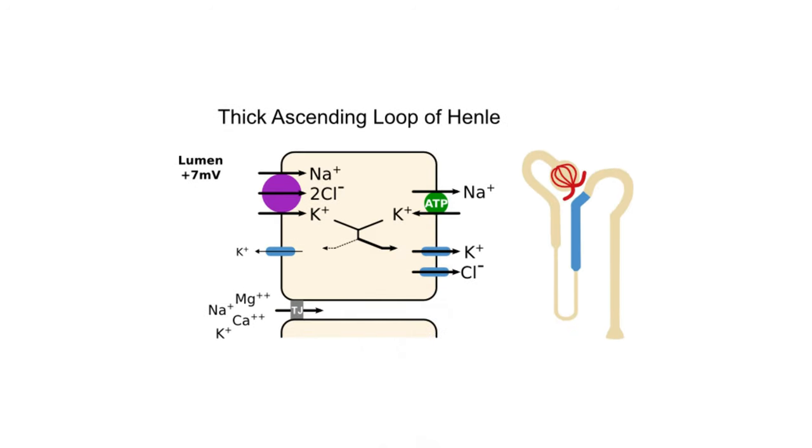Let's see this normally functioning nephron. Thick ascending loop of Henle has sodium-potassium chloride co-transporter in its luminal side which helps in reabsorption of sodium chloride and potassium. It also generates voltage gradient which is required for calcium reabsorption.